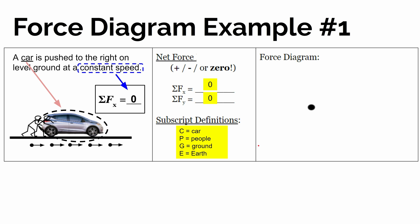The first force you should include on any object is the force of gravity, because objects near the earth's surface or any massive body will feel a gravitational force. So we label the force of gravity on the car by the earth: F, G, C, E.